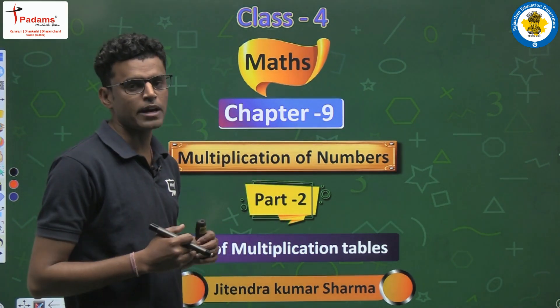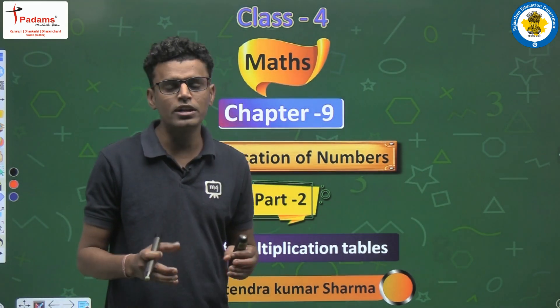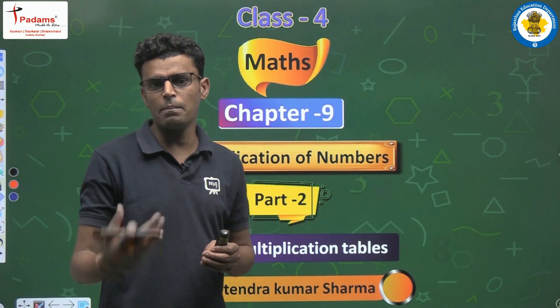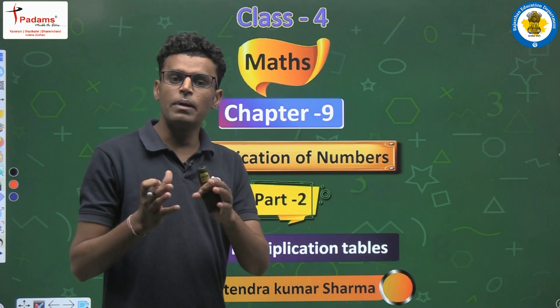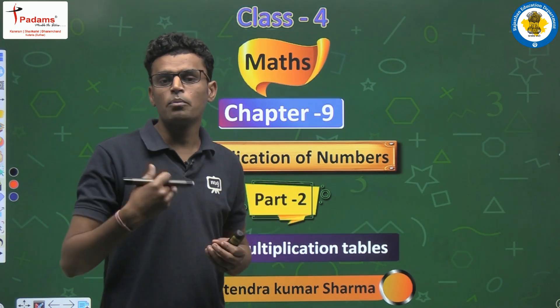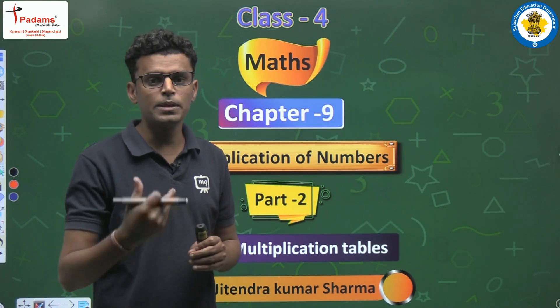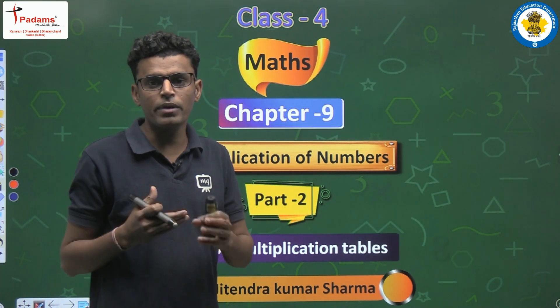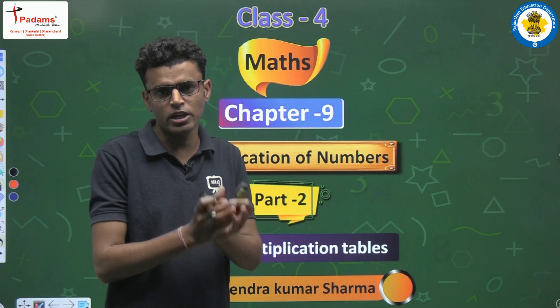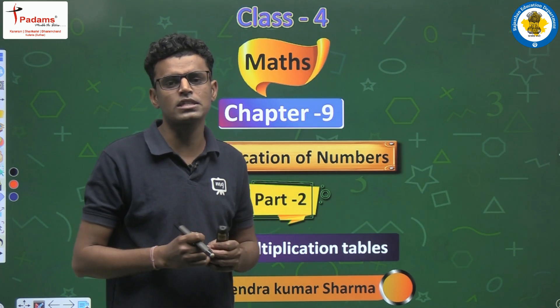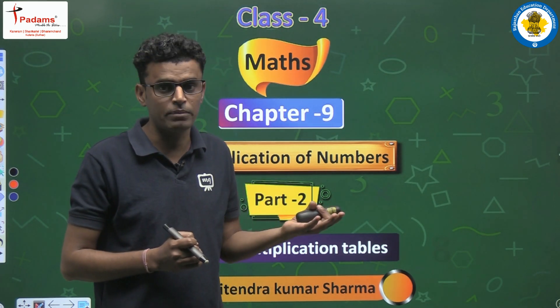we already completed our first part in previous class. There we learned about the multiplication of numbers. How to multiply numbers? What is the basic rule of multiplication? What is product? How do we multiply two numbers? By repetitive addition or by using tables, we learned all these in part 1. So,